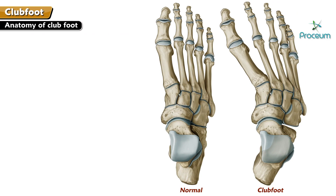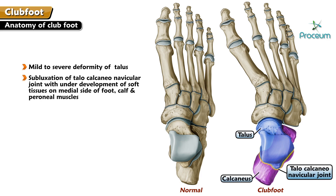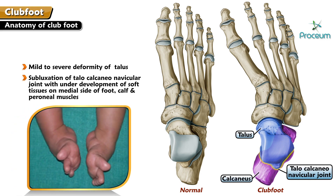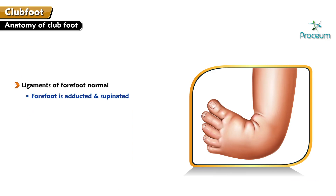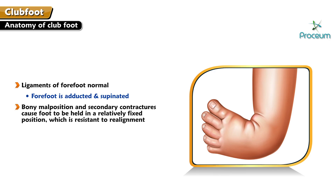Anatomy of clubfoot. The main anatomic abnormality is a mild to severe deformity of the talus, which is small and abnormal in all of its relationships. There is subluxation of the talocalcaneonavicular joint with underdevelopment of the soft tissues on the medial side of the foot, and frequently of the calf and peroneal muscles. The ligaments of the forefoot are normal but the forefoot is adducted and supinated. Bony malposition and secondary contractures cause the foot to be held in a relatively fixed position which is resistant to realignment.